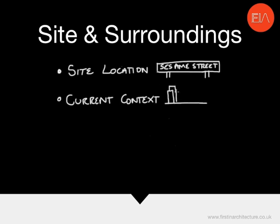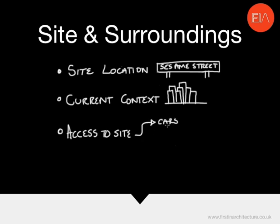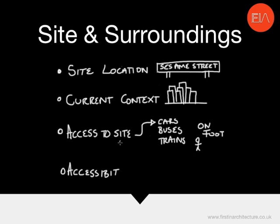The access to the site: is there car parking in proximity? Are there bus routes, bus stops — how close are these to the site? Things like train stations — is it on a good train network? What about cycle routes — are these anywhere near to the site? Pedestrian walkways, things like that. And finally, accessibility: are there current provisions for disabled access to the site, and how will this need to be considered in your design?